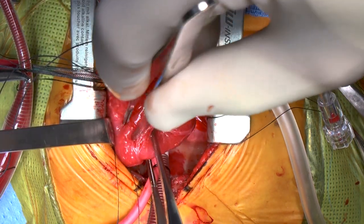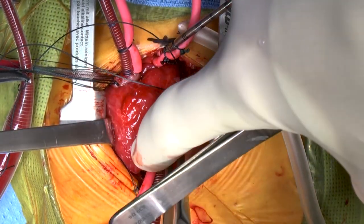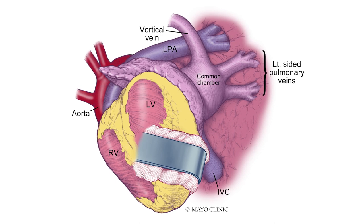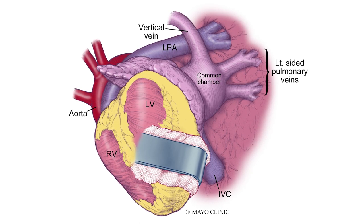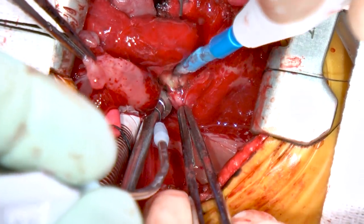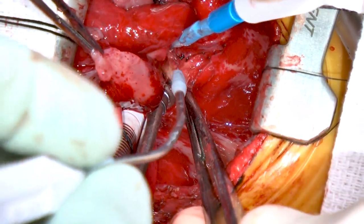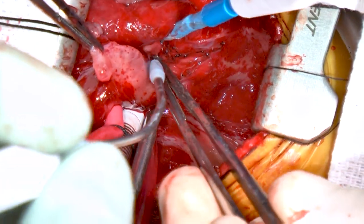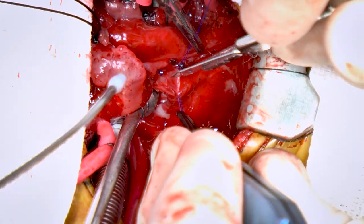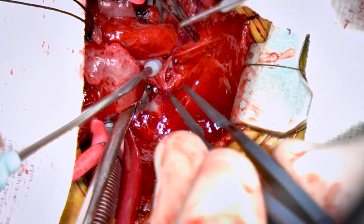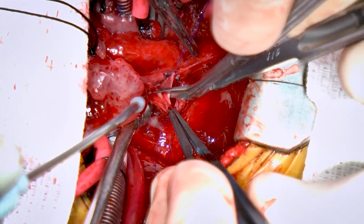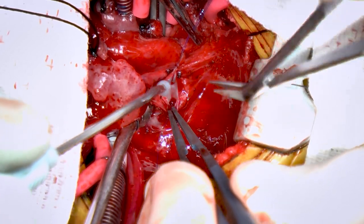Now we are flipping the heart into the right chest to access the back side of the heart where this confluence of the pulmonary veins is. This diagram shows the anatomy with the common chamber containing the veins behind the left atrium. We are dissecting out this pulmonary venous confluence. Now we are entering the confluence. You can see on either side the pulmonary veins entering the confluence. We are dissecting out further to create a large enough opening for the anastomosis.